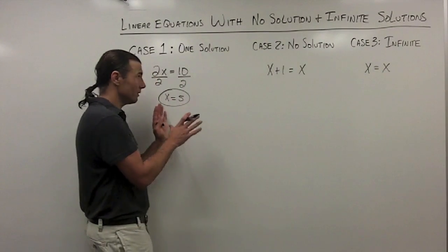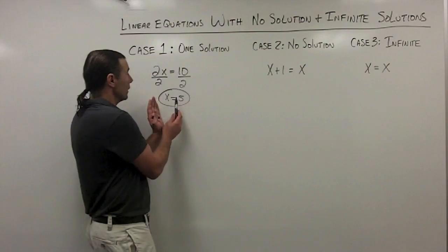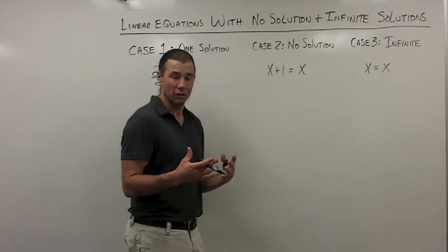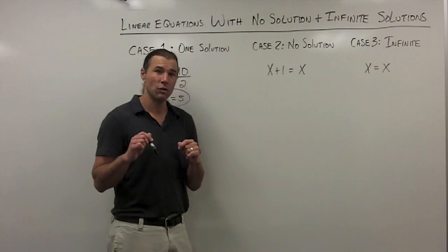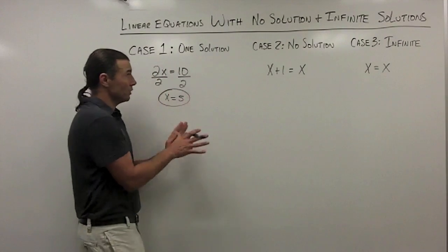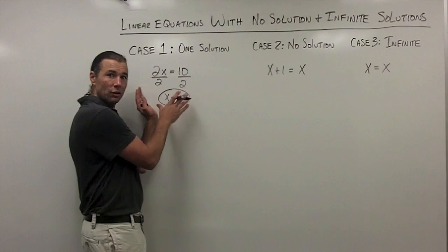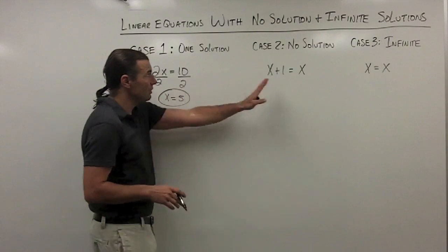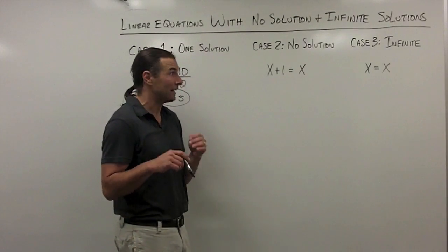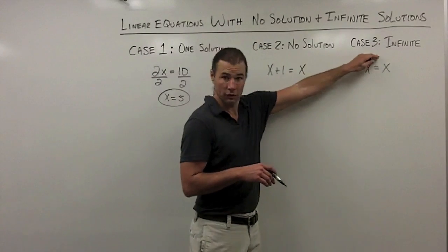When I break them down in this simple form, it's easy to see that yes, this one's going to have one solution, this one's going to have no solution, and case 3 is going to have infinite solutions. But what you're going to have to do is be able to recognize, when you're solving an equation, which of these three cases comes up. These two cases — some weird stuff is going to happen when we go to solve, and you need to recognize that and identify it as either a no solution case or an infinite solution case.